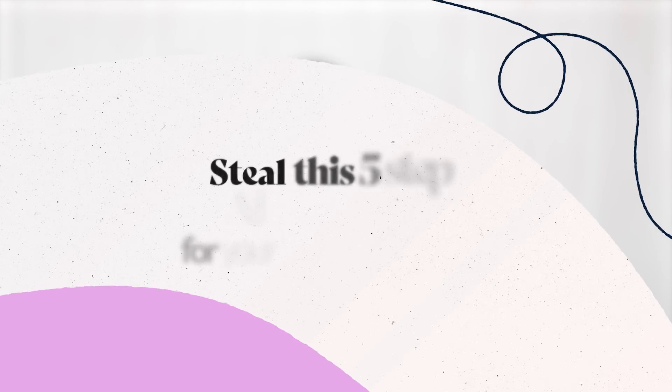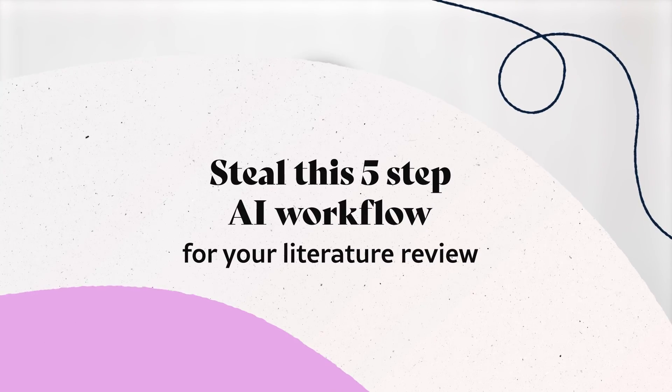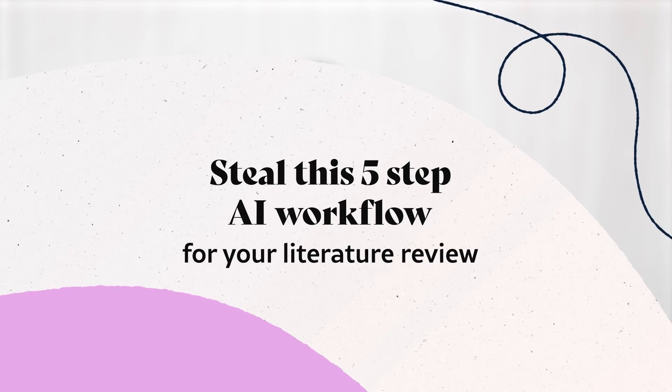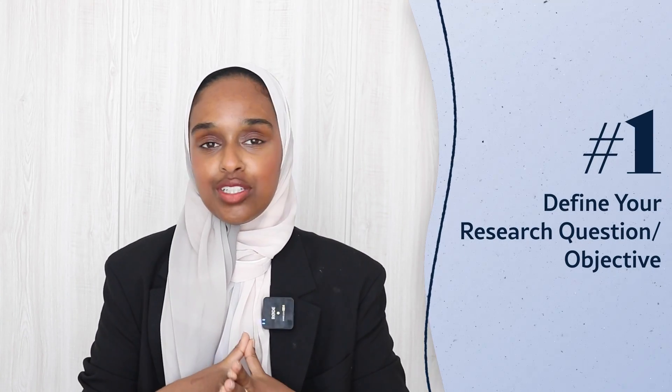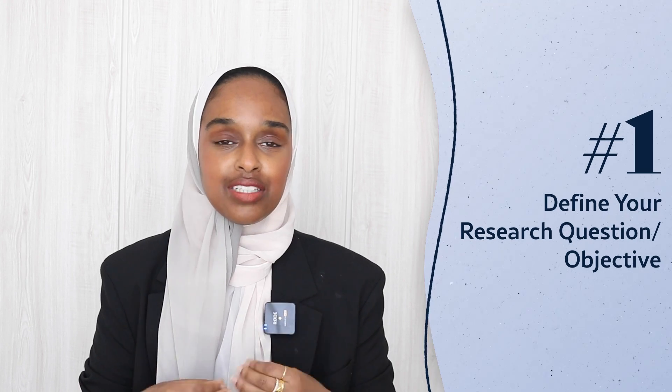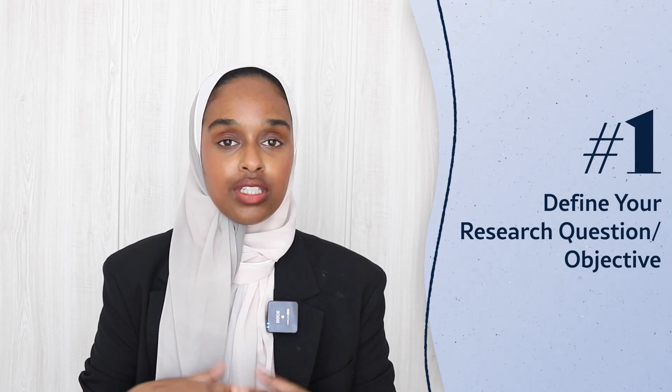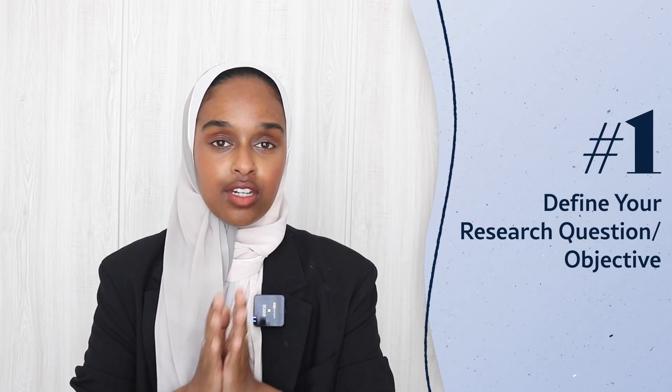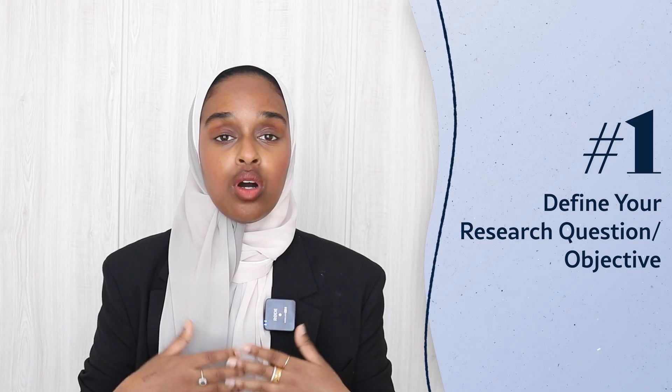This is the five-step AI workflow that you can steal to write your next literature review. The first step is to define your research question and objective. You need to clearly define what research area you are looking into, what the specific research question or topic is that you want to address, and you're really defining the scope of your review, because this is going to determine the kind of literature you'll be looking for in the next stage.